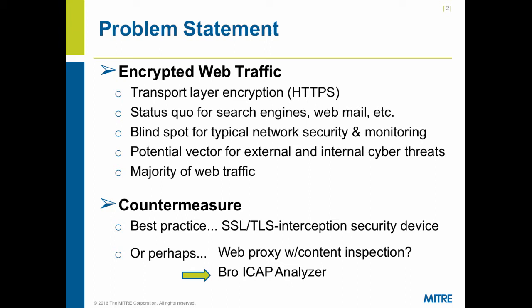So with that being the goal — having that kind of appliance on your network — what can you do in the interim? A lot of folks have web proxies on their network, and a lot of web proxies are capable of doing SSL interception. Many are also capable of interfacing with content inspection services on the back end for antivirus, malware inspection, or data loss prevention of outbound traffic. If you fall into that category, the BRO ICAP analyzer would be suitable to use to increase visibility on your network.